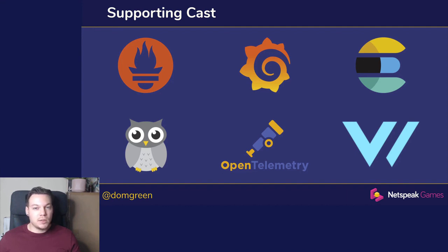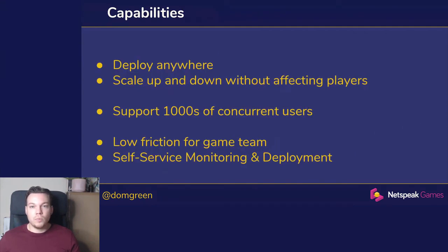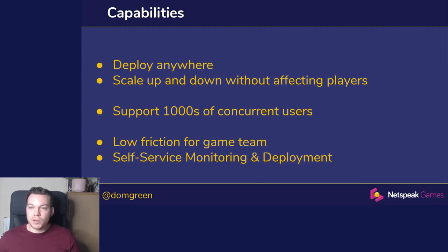So what have we been able to achieve in six months? Kubernetes has given us the ability to build something that can be deployed anywhere — any location, any cloud provider, or even on bare metal. With the addition of Agones, we can scale up and down without affecting players connected to the game. This has given us the ability to support thousands of connected users on multiple instances of Unreal, in a way that's low-friction for the game team — with a self-service way of deploying and monitoring their game.